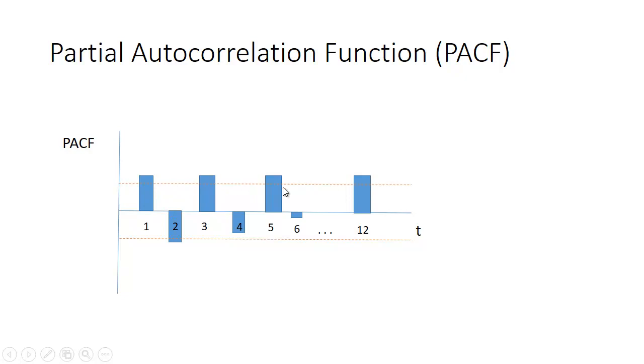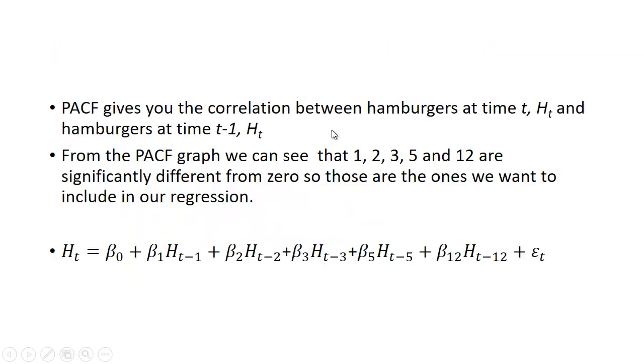And they'll also tell you whether they're significantly different from zero. So oftentimes they'll draw a band like this, and if the autocorrelation function is above that band it's significant, if it's below it's not significant. So what we've drawn here is lags 1, 2, 3, 5, and 12 happen to be significant. So if we were putting together some sort of autocorrelation model, we'd like to include those lags in our regression.